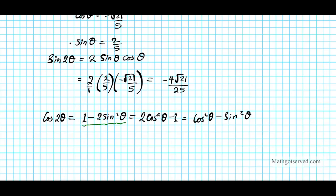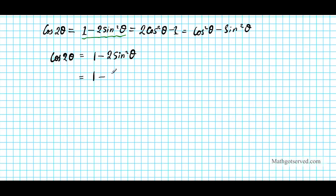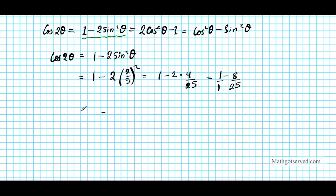Using cosine 2θ = 1 − 2sin²θ, we substitute: 1 − 2·(2/5)² = 1 − 2·(4/25) = 1 − 8/25. Expressing 1 as 25/25 gives 25/25 − 8/25 = 17/25. So cosine 2θ = 17/25.